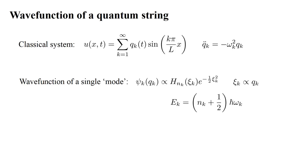The mode energy is E_k equals quantity n_k plus one-half times h-bar omega k, where n_k is the number of energy quanta contained in the mode.